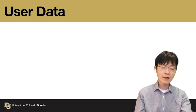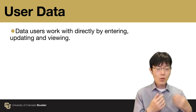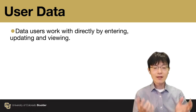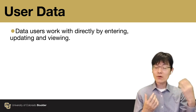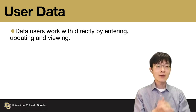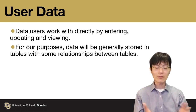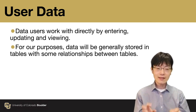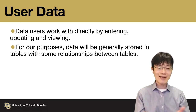User data will be quite simple — it is the data users work with directly by entering, updating, and viewing. It will be the actual data: all the numbers and all the information we need to record. This information will generally be stored in tables with some relationships between tables, which is exactly how we have the name 'relational database'.